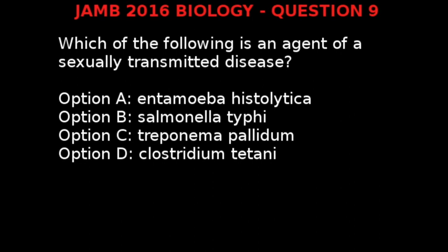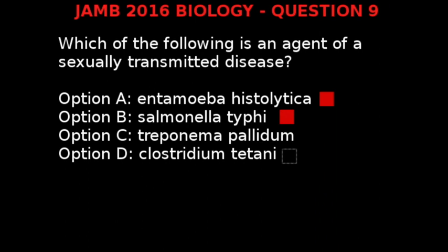JAM 2016 Biology Question 9. Which of the following is an agent of a sexually transmitted disease? Option A: Entamoeba histolytica. Option B: Salmonella typhi. Option C: Treponema pallidum. Option D: Clostridium tetani. Entamoeba histolytica causes amoebiasis, Salmonella typhi causes typhoid fever, and Clostridium tetani causes tetanus — none of these are sexually transmitted. Treponema pallidum is a bacterium that causes syphilis, which is a sexually transmitted disease. Therefore, our correct answer is Option C.